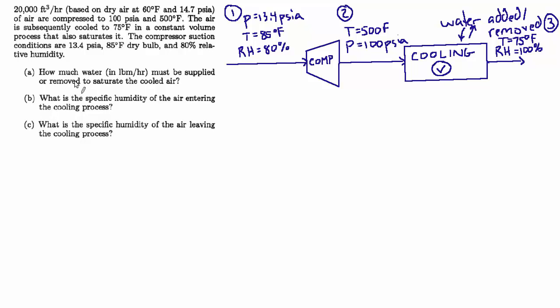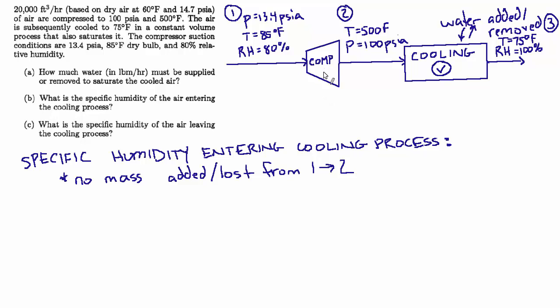So let's start with the specific humidity entering the cooling process. The first observation is that in the compression, there's no mass added or lost as we go from state 1 to state 2. No mass added or lost from state 1 to state 2. So however much water vapor is in the air, however much dry air there is, and however much water vapor there is before the compression process, that whole mass is being compressed. So the mass isn't different at the end, it's just at a higher pressure. So the humidity ratio at 2 is the same as the humidity ratio at 1. And normally we say if we know any two things about air, whether that be temperature and humidity or any other two things, that's enough to say the state is fully defined.